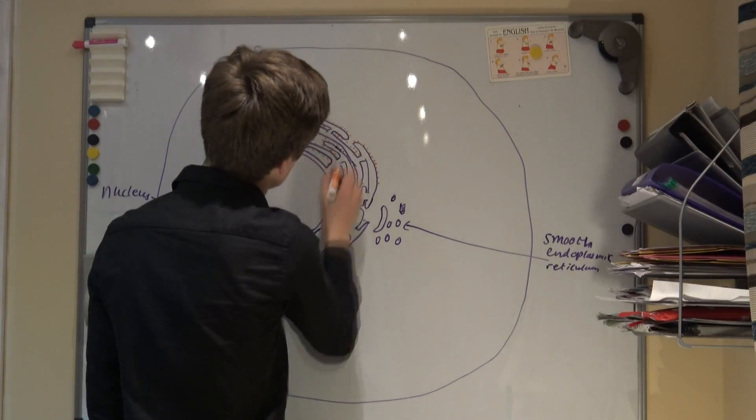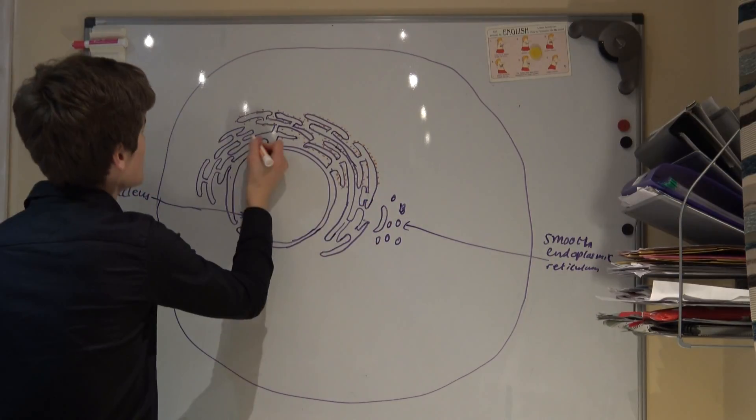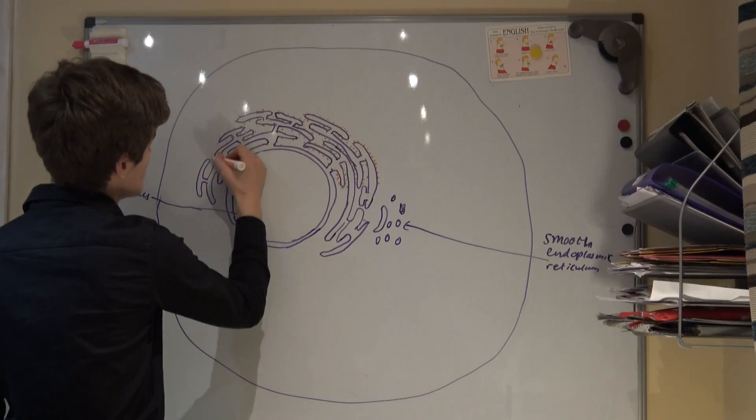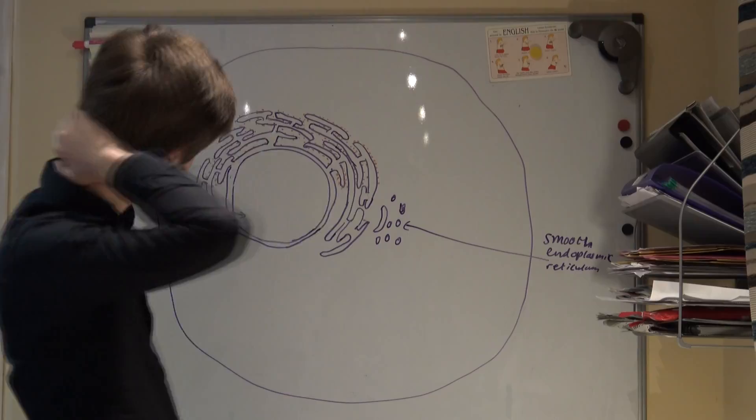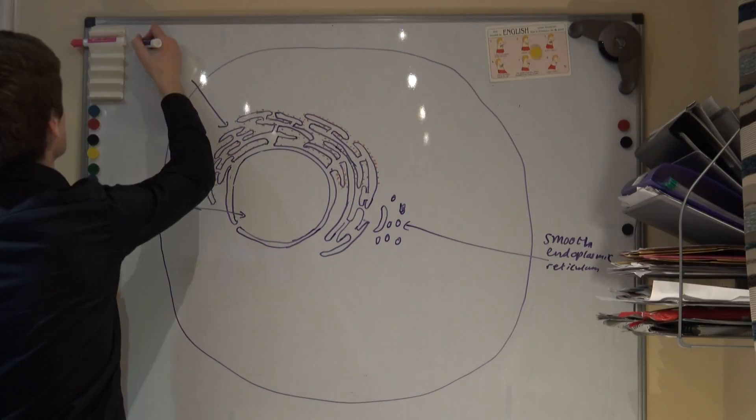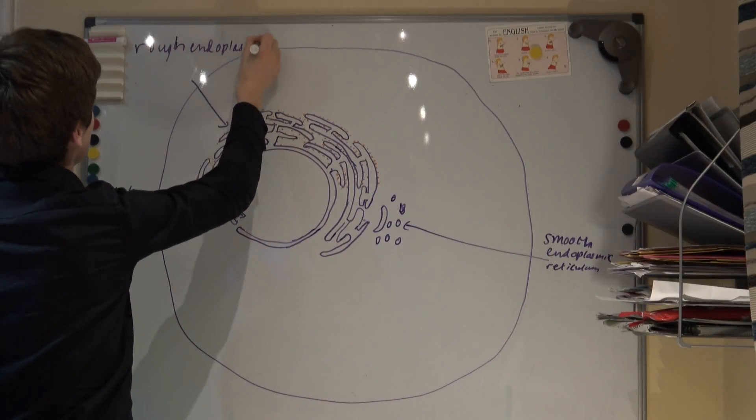There are two types of endoplasmic reticulum. The smooth endoplasmic reticulum which is responsible for lipid and carbohydrate synthesis and storage. And the rough endoplasmic reticulum which has ribosomes bound to the surface and is responsible for the transport and synthesis of proteins.